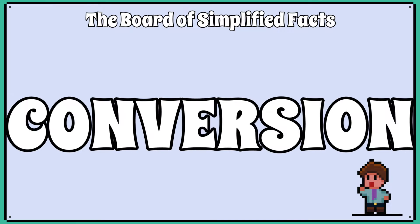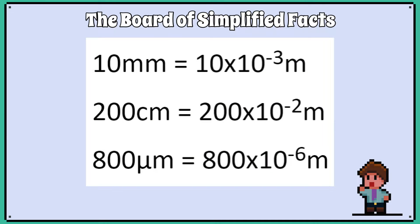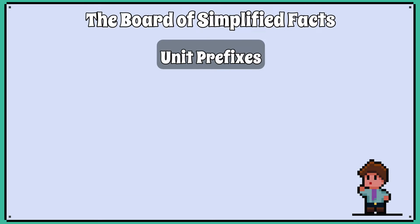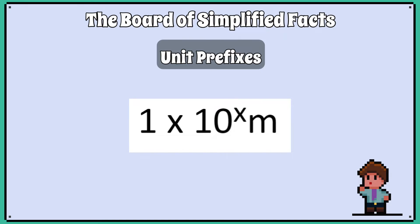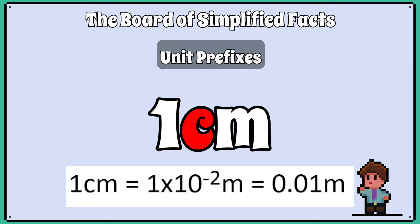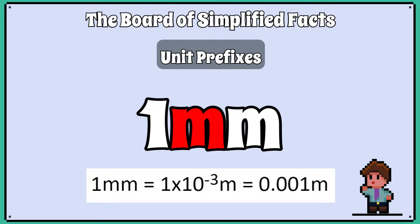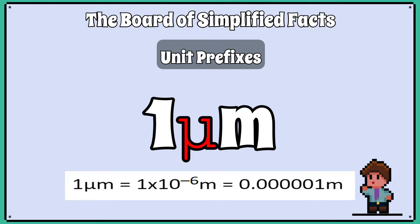Always do a unit conversion first. I prefer always changing everything into metres. It is good practice because the unit prefix — centi, milli, micro, etc. — represents a metre times 10 to the power of something. For example, for a centimetre it is times 10 to the negative 2, for a millimetre it is times 10 to the negative 3, and times 10 to the negative 6 for a micrometre, and so on.